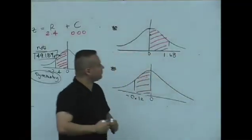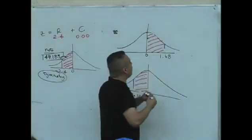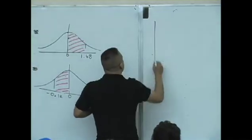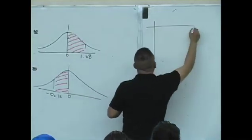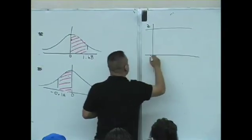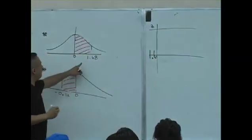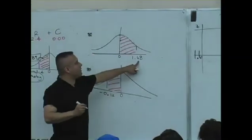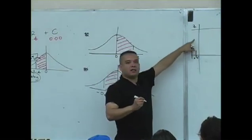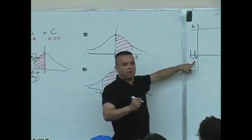So what did you guys get? Which row are you guys looking for here? You're going to look for the 1.6 row, because this is your Z-score to the nearest tenth position. Get as close as you can without going over.